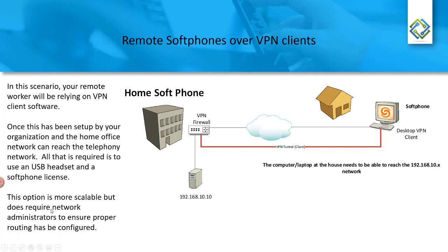If you have a desktop VPN soft client, remote laptops or PCs can connect to the corporate local area network, and soft phones can use that connection for everyday business use. You'll need a USB headset and a soft phone license if you don't already have one. This option is more scalable, but it does require more network administration on the back end. Remote phones over VPN need access to every other remote network — whether corporate, another office, or another VPN remote user.